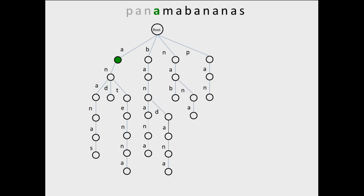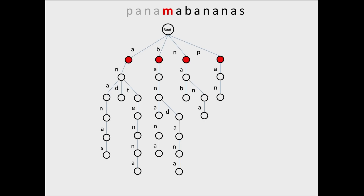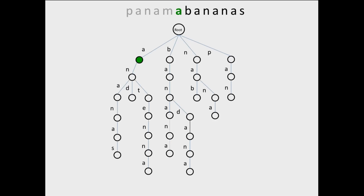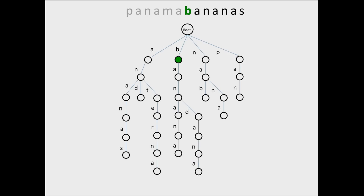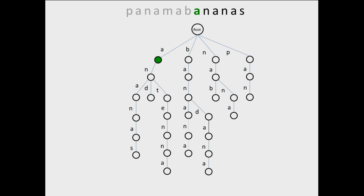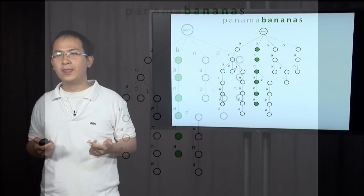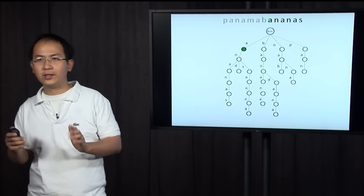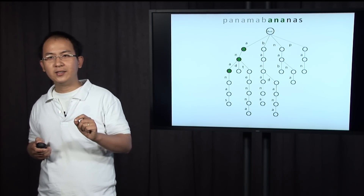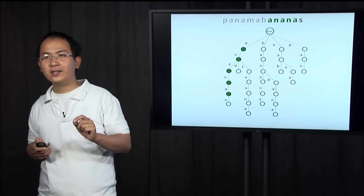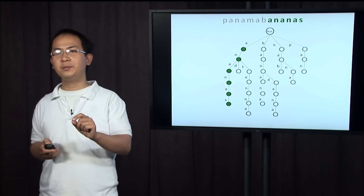We move to the next position: A — we get stuck at N, so no match. We move to the next: A — no match immediately. Next position, B: B, A, N, A, N, A, S — we can find a match here. We move to the next: A, N, A, N, A, S — we can find a match at this position too.